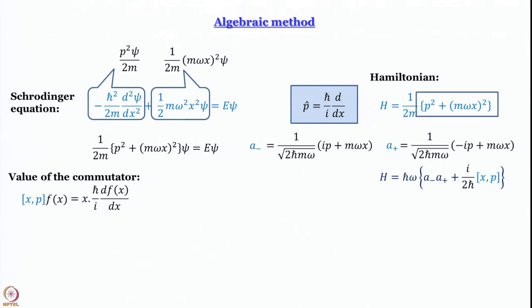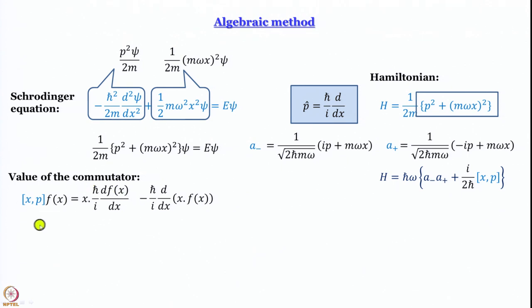So [x, p] acting on f(x) gives us: first term, x · (ℏ/i)·df/dx — where p has acted on f(x) and then x acts by multiplication. Second term: minus (ℏ/i)·d/dx of the product x·f(x). The commutator of x and p operating on f(x) is therefore: x·(ℏ/i)·df/dx − (ℏ/i)·d/dx[x·f(x)].